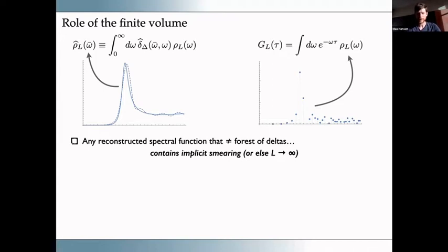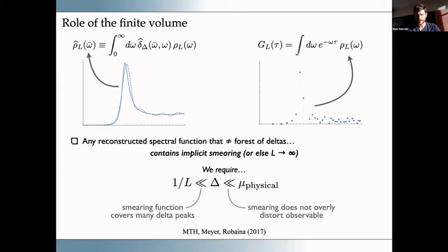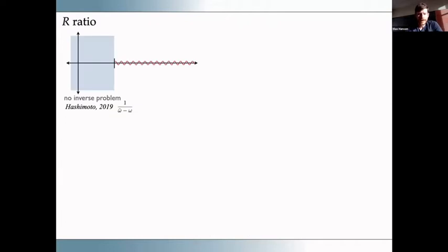This is perhaps slightly disingenuous because we know the real problem is over-smearing. While any reconstructed spectral function must have some implicit smearing, the challenge is to achieve a hierarchy of scales: we want the inverse box size to be much less than the smearing width, such that we cover many delta peaks, but we also want the smearing width to be much less than the physical scales of the system. Trying to achieve this window is the core challenge we face.